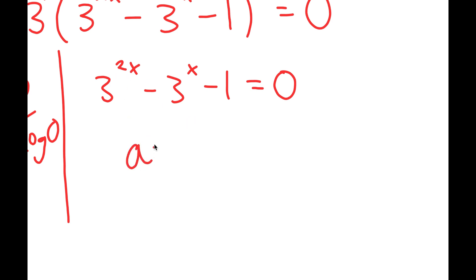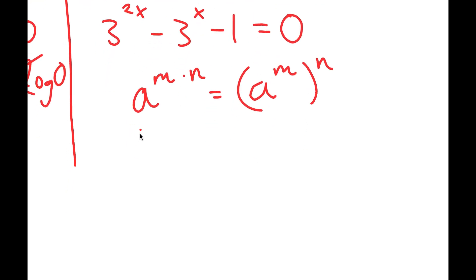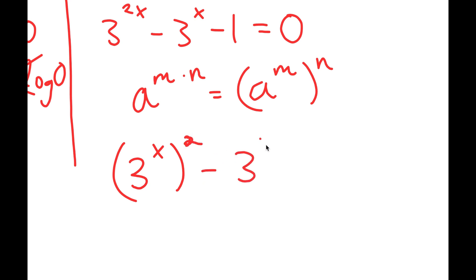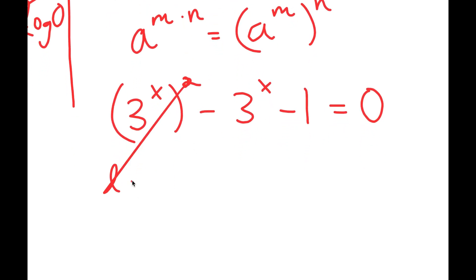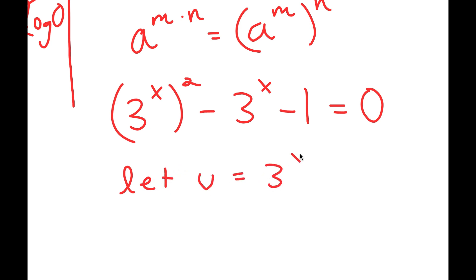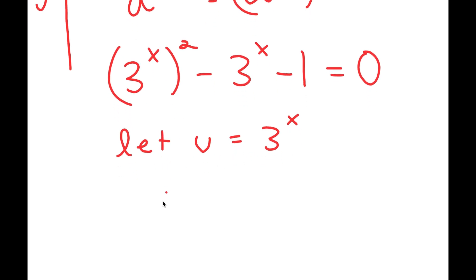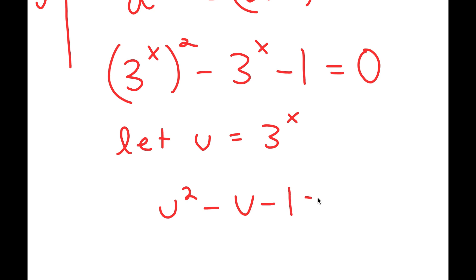If I have something in the form a to the power of m times n, this is the same thing as a to the power of m to the power of n. So 3 to the power of 2x I can rewrite as 3 to the power of x, to the power of 2, and I have minus 3 to the power of x minus 1 equals 0. Now I'm going to let u equal 3 to the power of x. Substituting in u, I get u squared minus u minus 1 equals 0.